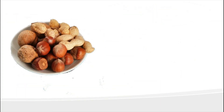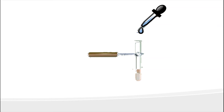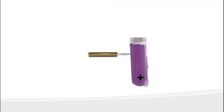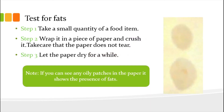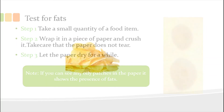Test for protein: take a small quantity of a food sample. If the sample is solid, first make a paste or powder of it. Put some of it in a clean test tube and add 10 drops of water to it, then shake the test tube. Using a dropper, add two drops of copper sulfate solution and 10 drops of caustic soda solution to the test tube. Shake well and wait for a few minutes. If the color of the solution changes to violet, as shown in the image, it indicates the presence of protein in the given food item.